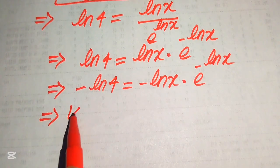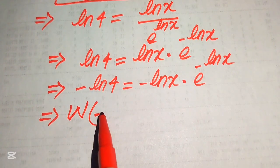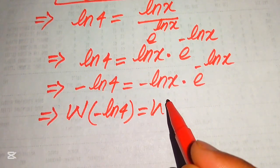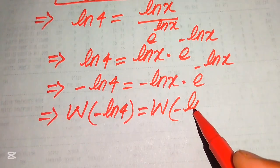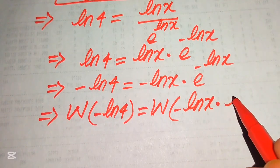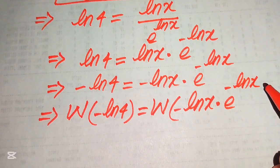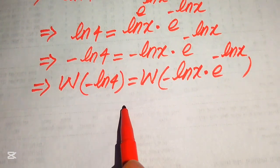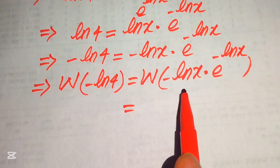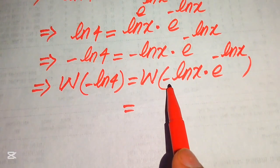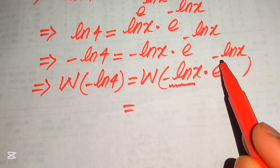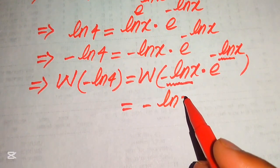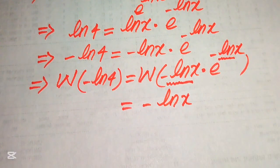Now we apply the Lambert W function on both sides: W of minus log 4 equals W of minus log x times e to the power of minus log x. According to the definition of the Lambert W function, the output is the exponent of e, which is minus log x. So we have W of minus log 4 equals minus log x.